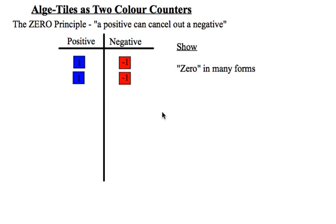The zero principle states that a positive and a negative cancel out. So right now I have two positives and two negatives, they cancel each other out so this is zero. Even though there are algae tiles up there, it's still zero. The key is if I add a blue positive one, I have to balance it with a red negative one. Again, this is still zero.